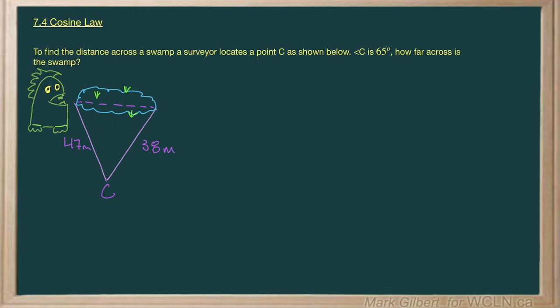Alright, it looks to me like the surveyor needs to find the distance across the swamp because of him. There is a swamp monster. The swamp monster might need a suitable habitat, so maybe he's looking for this distance here so that the swamp monster has a place to live.